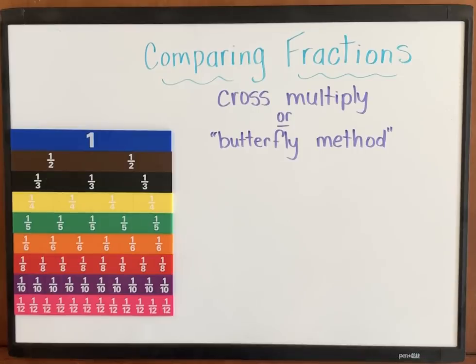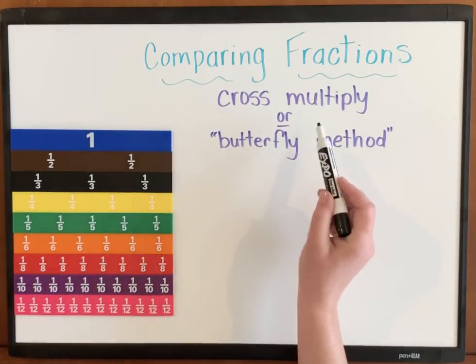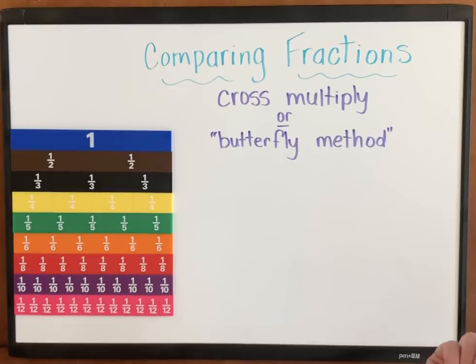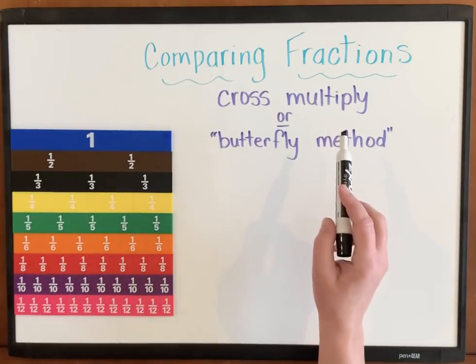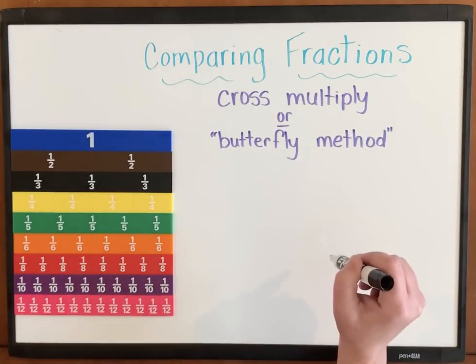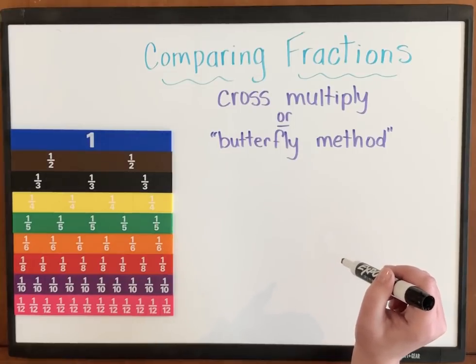We've been working with mental strategies such as common numerator, common denominator, one away from the whole, and using a benchmark half. Those mental strategies work some of the time, but this strategy cross multiply works every time. I don't consider this a mental strategy because when you have a mental strategy you're doing that in your head. When you cross multiply you're showing your thinking on paper and that's what makes this strategy work.